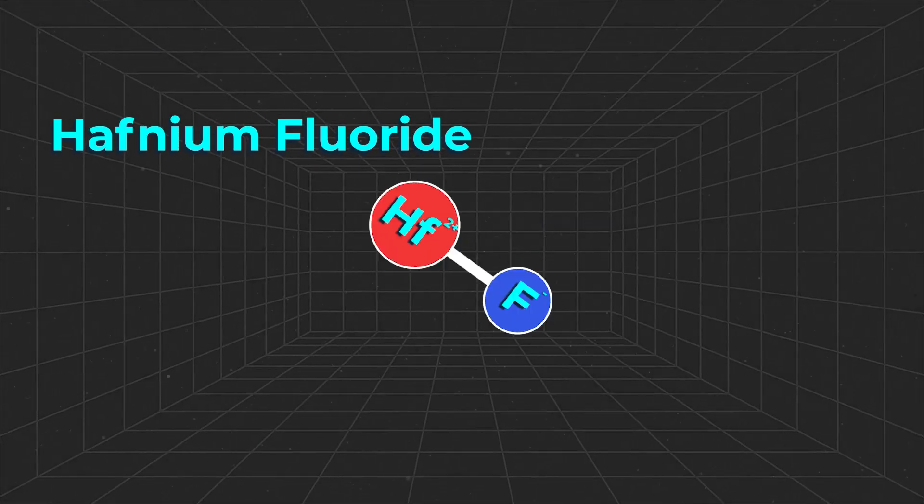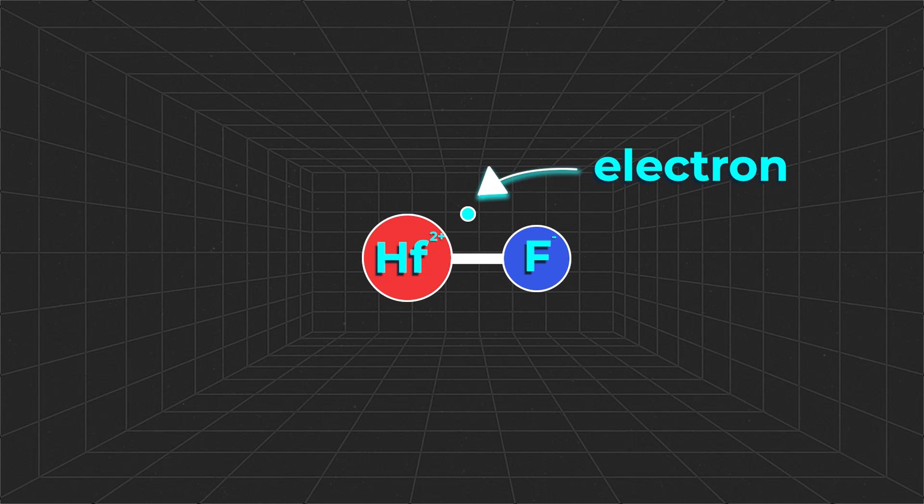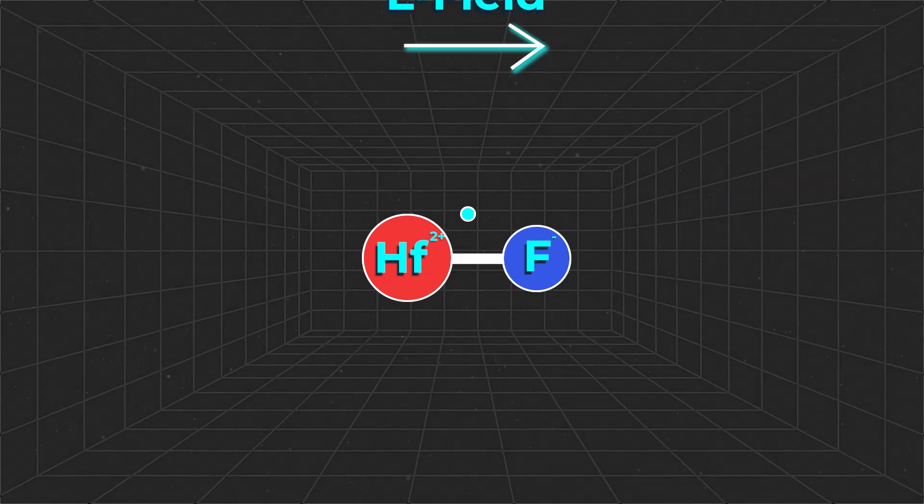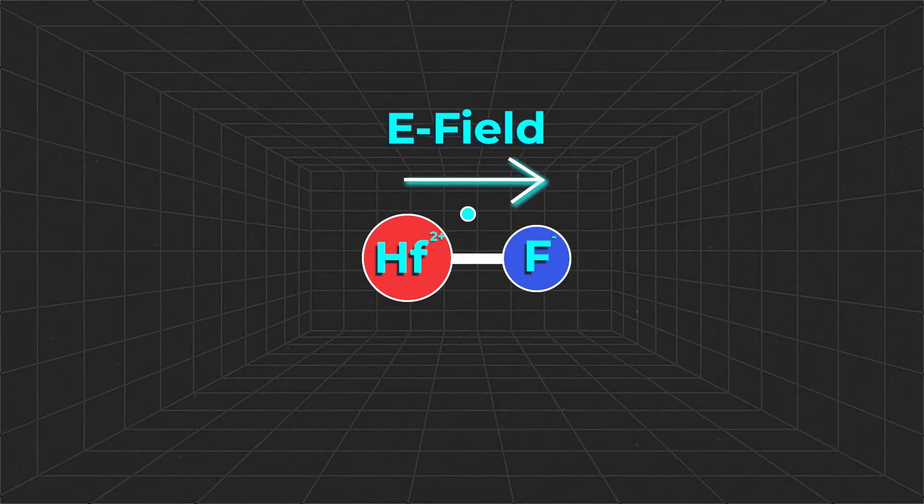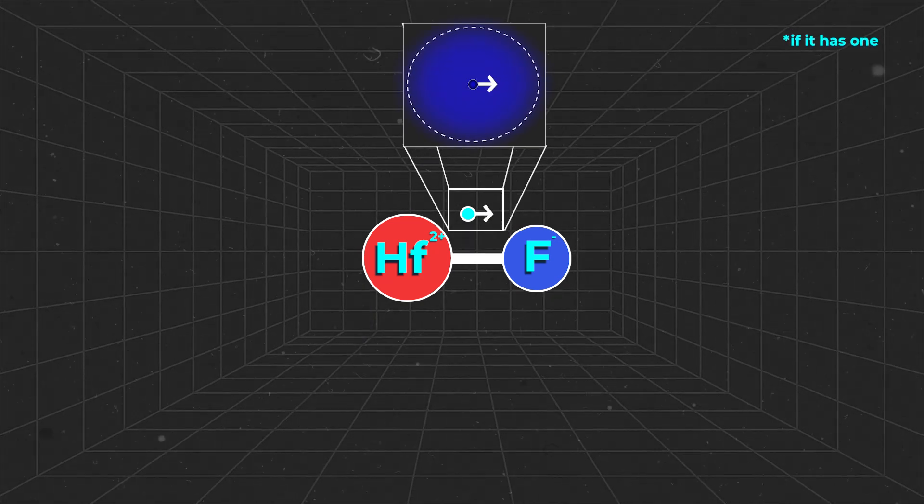In their system, the researchers tracked hafnium fluoride ions in spinning electric fields. Hafnium fluoride was selected due to its particular electronic structure and the large internal electric field that it possesses, making it highly sensitive to the presence of an electron's electric dipole moment.